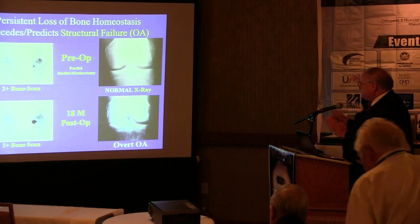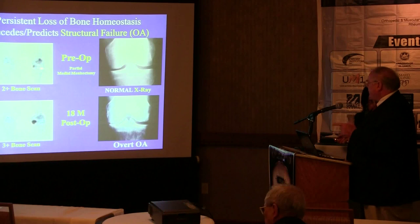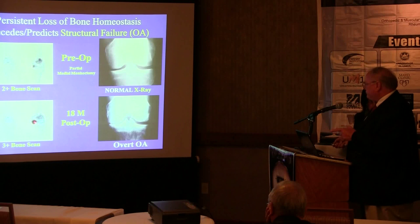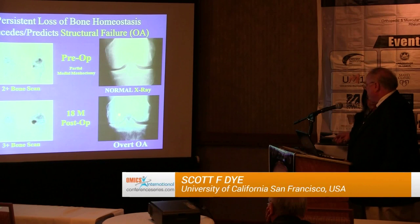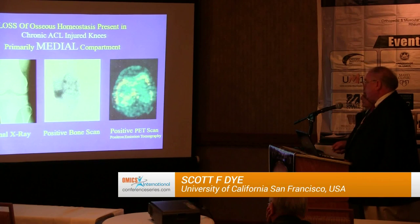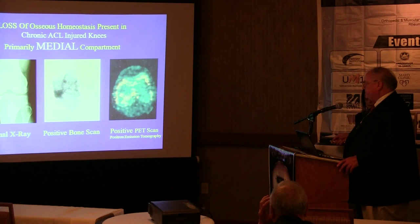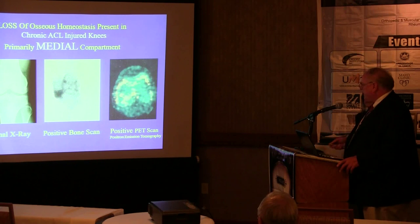Persistent loss of bone homeostasis precedes structural failure. If your bone scan doesn't get better but gets worse, this positive bone scan that worsened predicted overt failure and osteoarthritis — going from normal x-ray to advanced arthritis in a short period of time. In chronic ACL-injured knees, the medial compartment is where the arthritis occurs, even though the initial injury is in the lateral compartment.